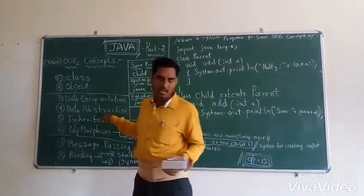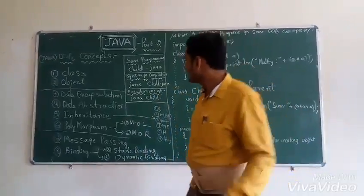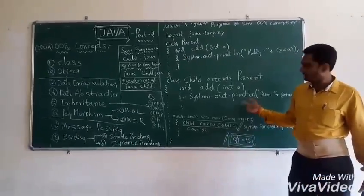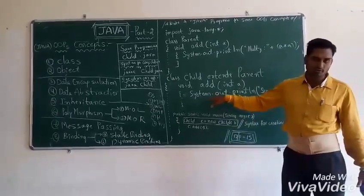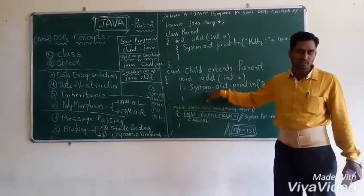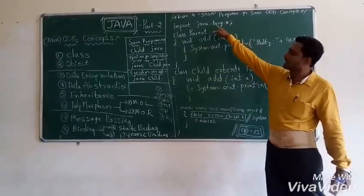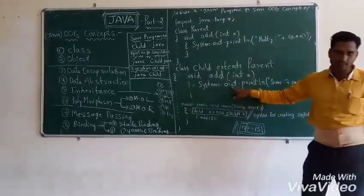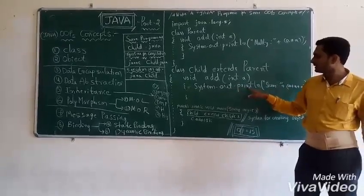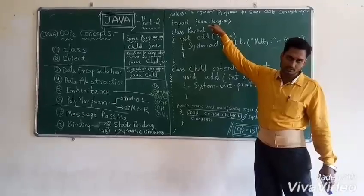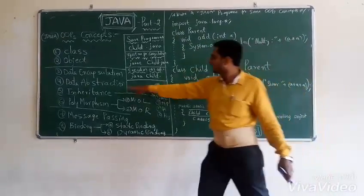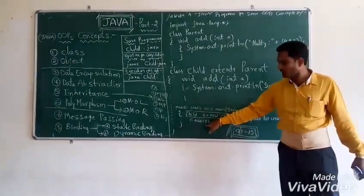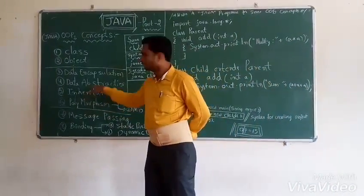Data Abstraction means hiding unnecessary data. Technically, for example, System.out.println — there is a System class inside a package, either java.lang or java.io. The out is a static variable, and the print method is inside that class and package. That internal implementation is abstracted; we only see the output. So hiding unnecessary data from the user is called data abstraction.